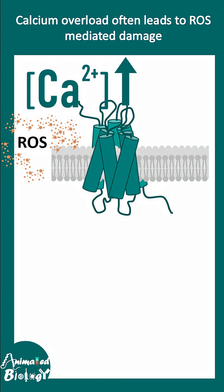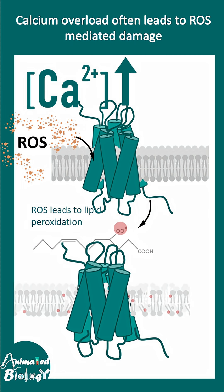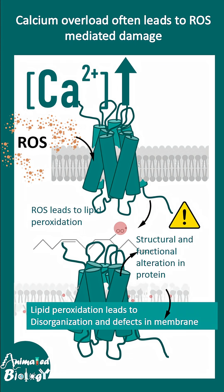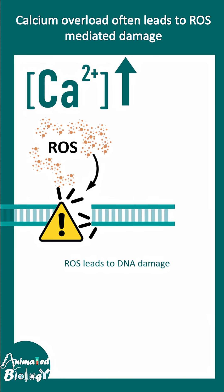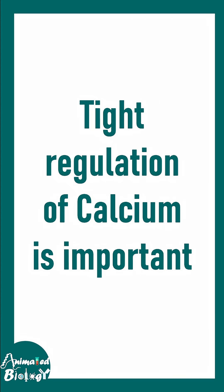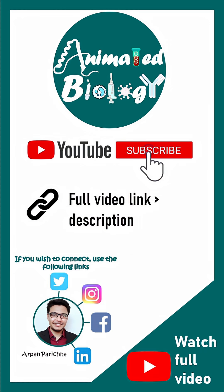Moreover, too much calcium can lead to generation of ROS inside the cell. ROS can cause lipid peroxidation and membrane damage, and can also damage proteins, making many receptors, ion channels, and enzymes non-functional. Too much ROS can also lead to DNA damage and DNA breakage. This is why too much calcium is bad for the cell and tight regulation of calcium is important.